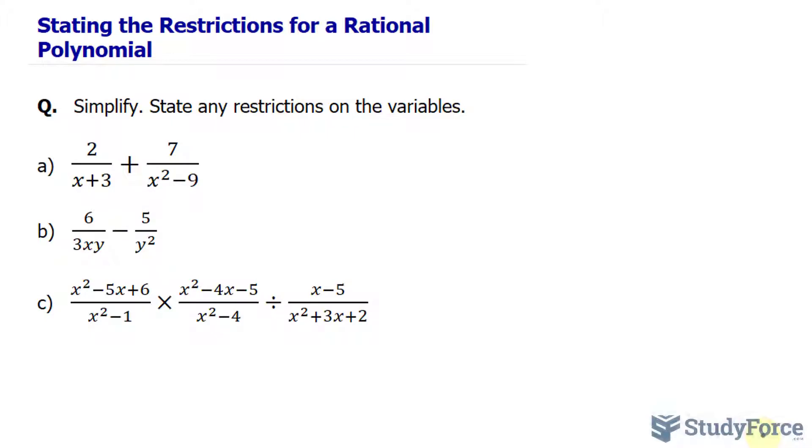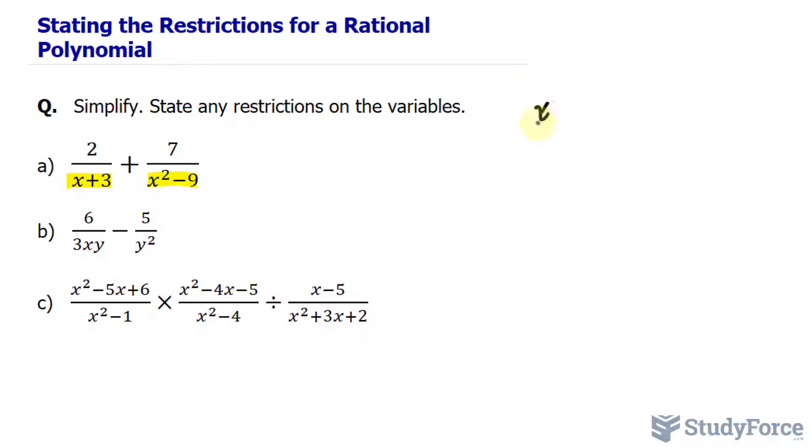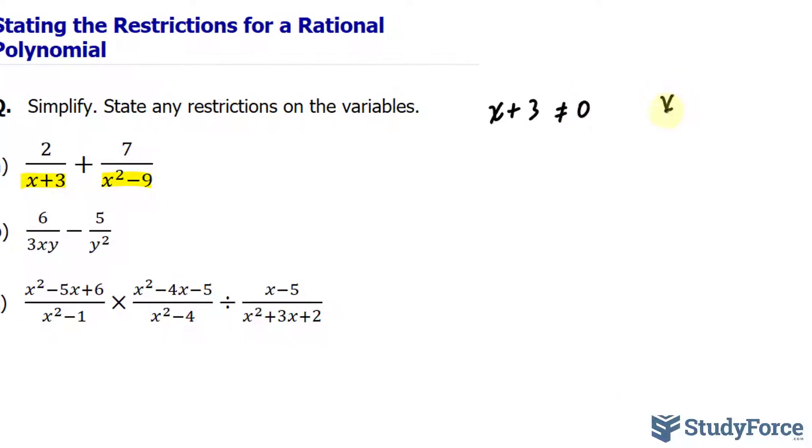When it comes to rational polynomials, you want to pay attention to the denominator. Both of these denominators cannot equal zero. So what I will do is write down x plus 3 cannot equal zero, and x to the power of 2 minus 9 cannot equal zero, and I'll solve for x as if they were equations.